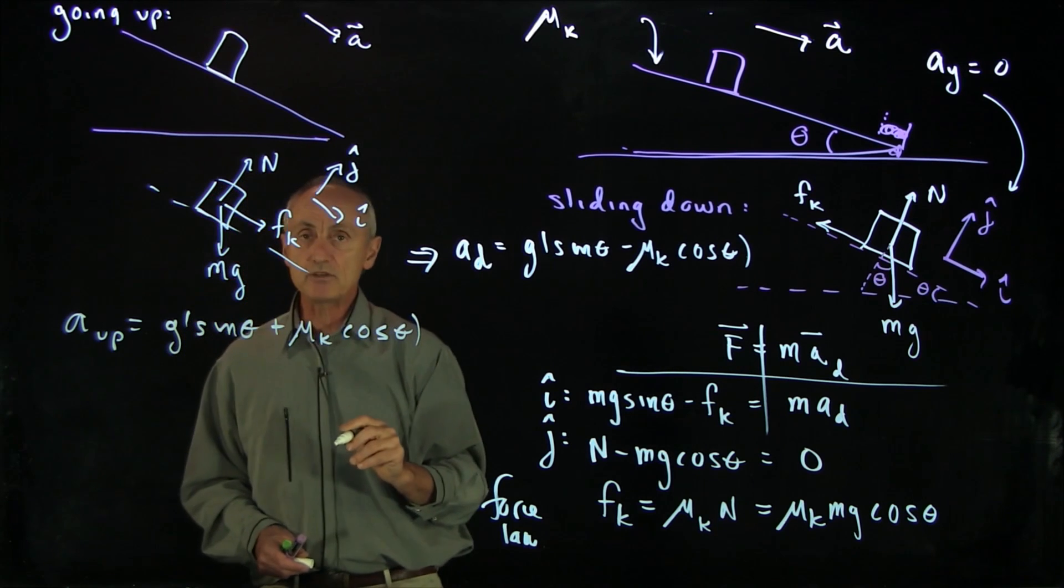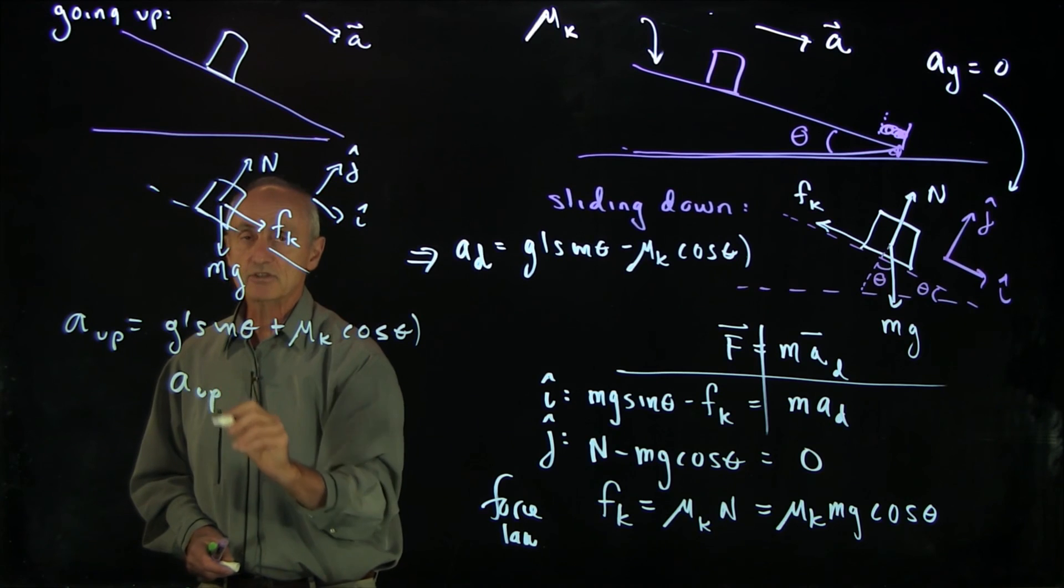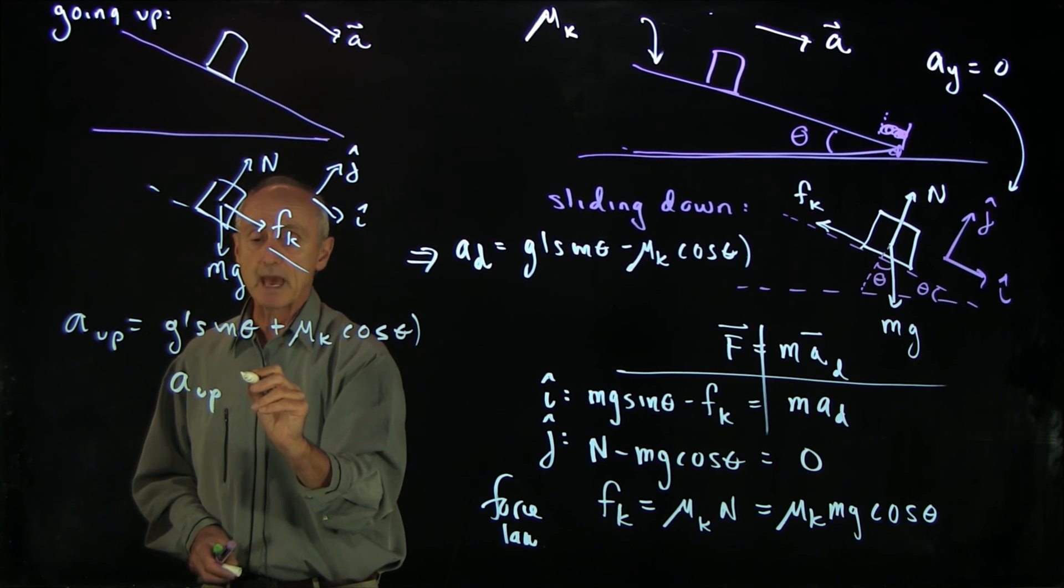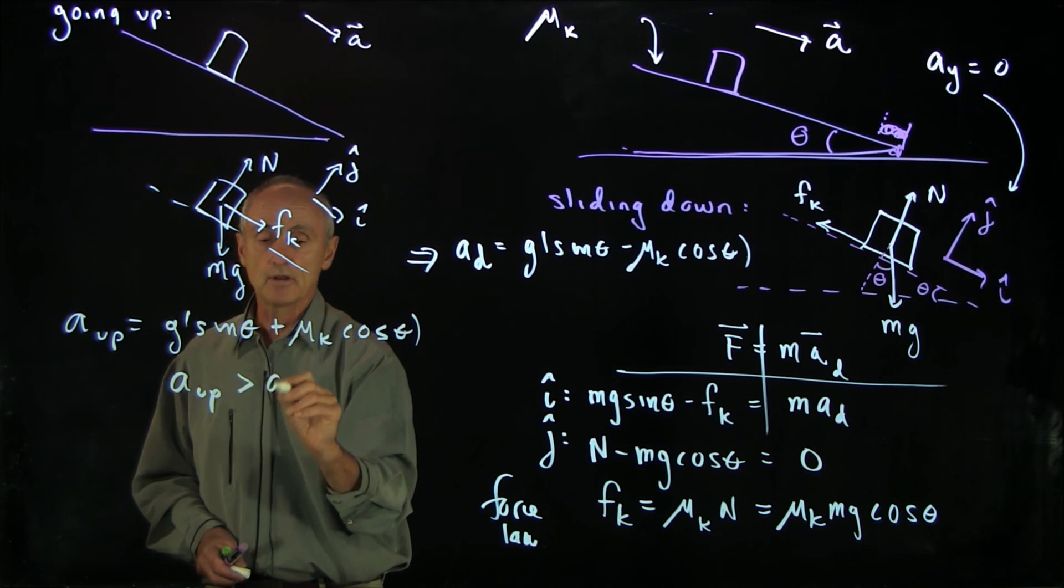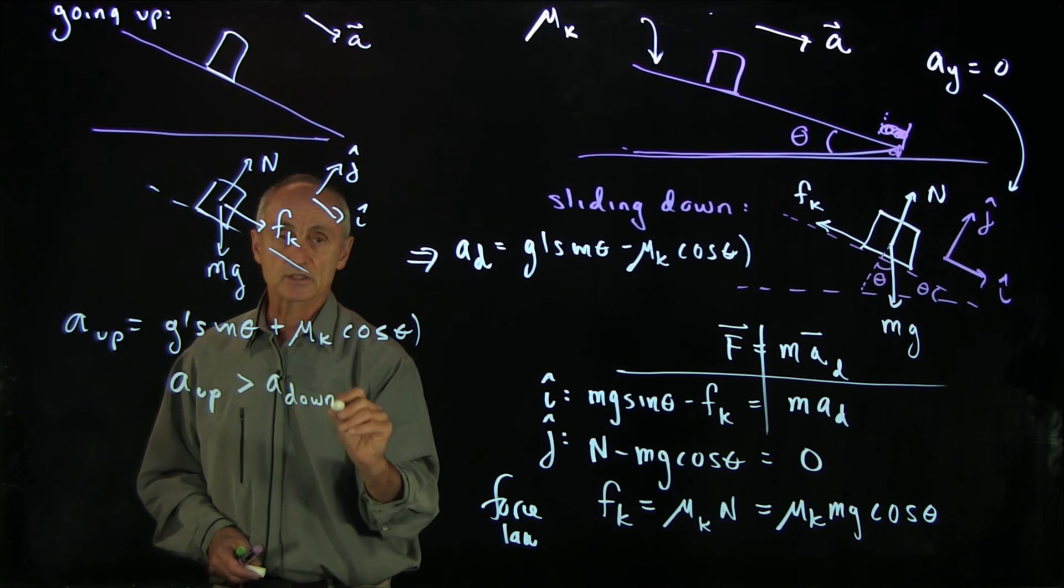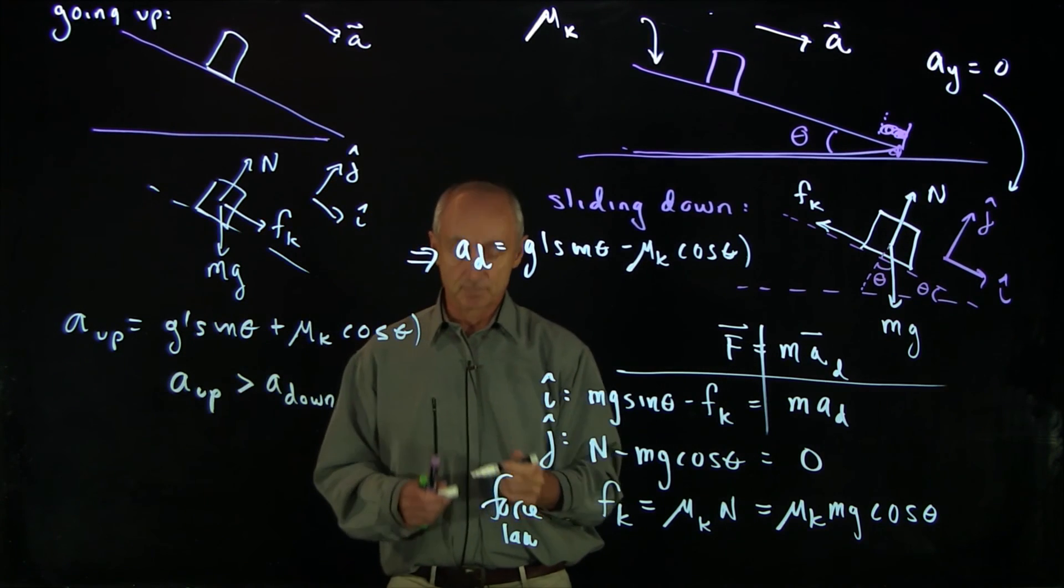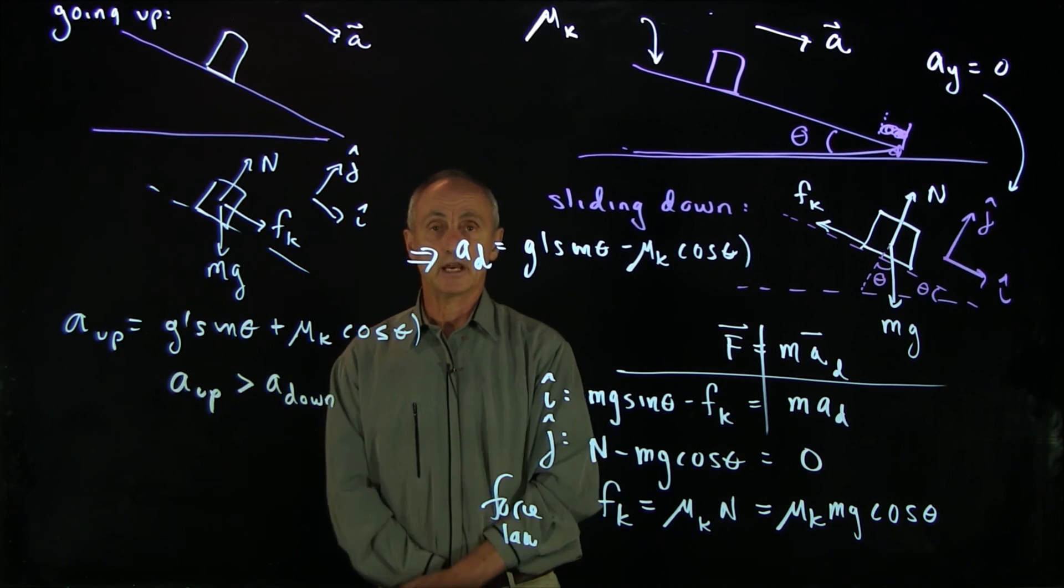Although it may seem slightly counterintuitive, the acceleration as the block is going up in magnitude is bigger than the acceleration as the block is going down. That's because of the direction of the kinetic friction force.